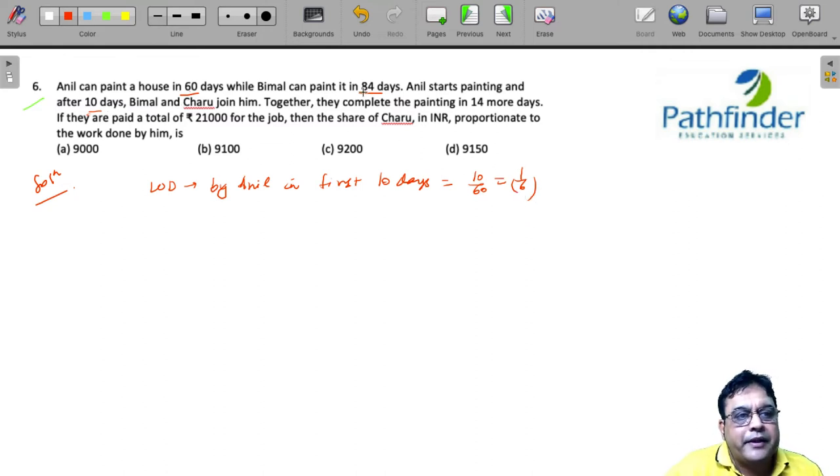Bimal can paint the house in 84 days. Anil starts painting and after 10 days, Bimal and Charu join. Together, they complete the painting in 14 more days.